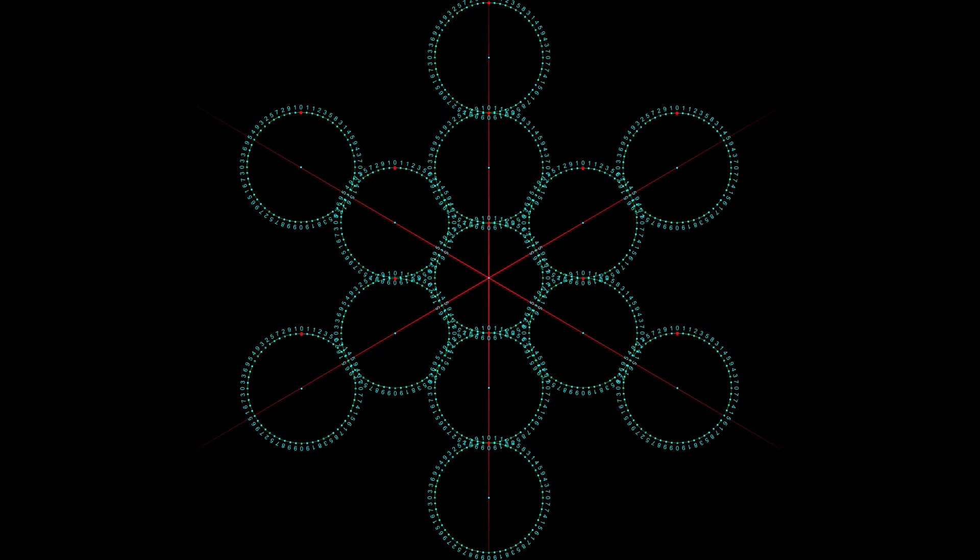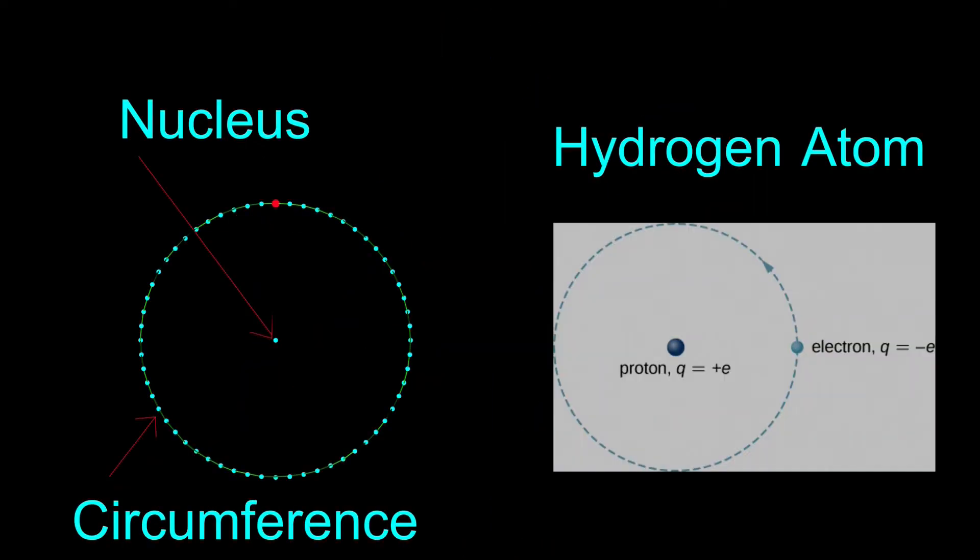If you look at all of nature, everything is following this simple pattern. A hydrogen atom is a simple circumference with a nucleus. The orbiting electron creates a circumference. The proton is the nucleus.